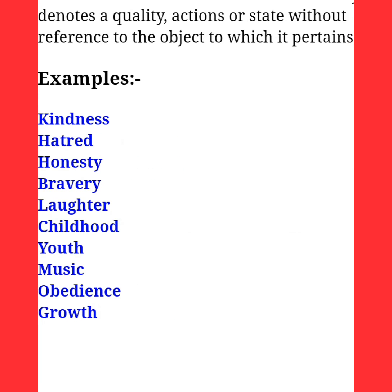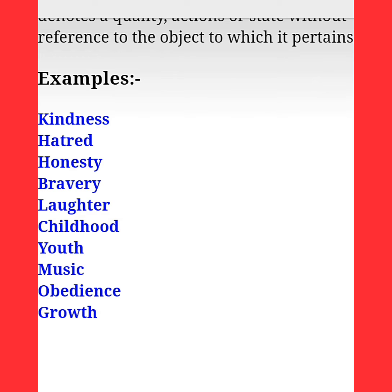An abstract noun is a noun which usually denotes a quality, action, or state without reference to the object to which it pertains. Examples include kindness, honesty, bravery, laughter, childhood, youth, music, obedience, and growth.